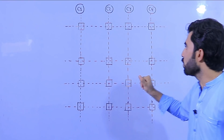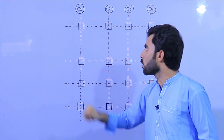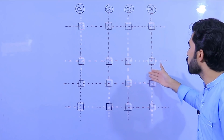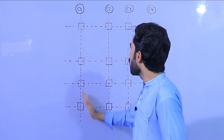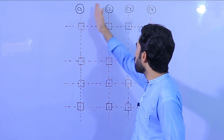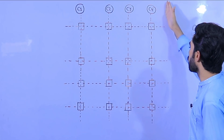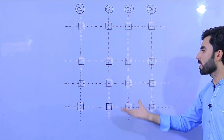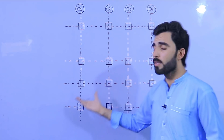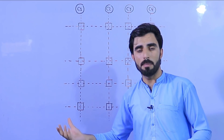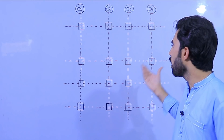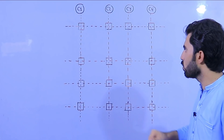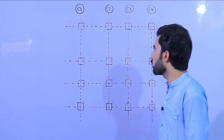Now I will guide you how to do foundation layout. As you can see, we have column one, column two, column three, and column four on this side. This drawing could be for shops or for a house — I will guide you how to do foundation layout.